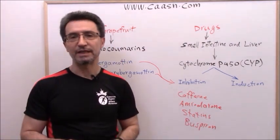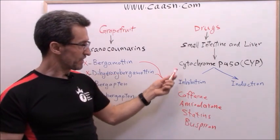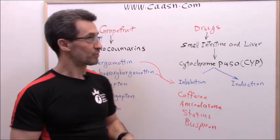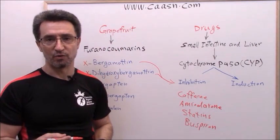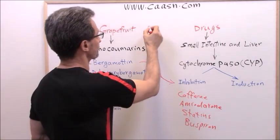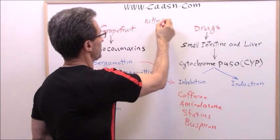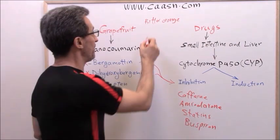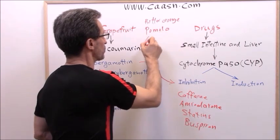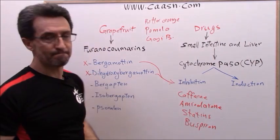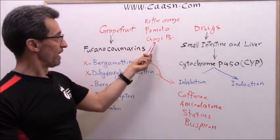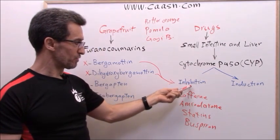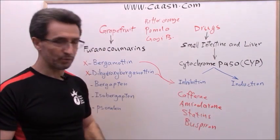Not only grapefruit — there are three more fruits that decrease the activity of cytochrome P450, but most people and most practitioners only know about grapefruit. Those three fruits are: bitter orange (sometimes called Seville orange), pomelo, and goji berries. They decrease the activity of this enzyme complex, leading to enzyme inhibition, and will definitely have the same interaction with those medications.